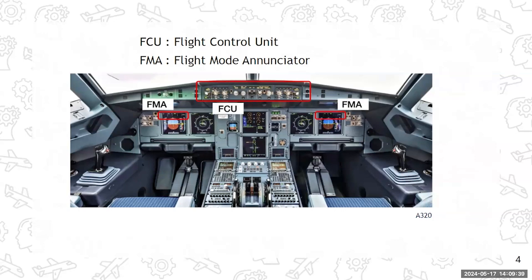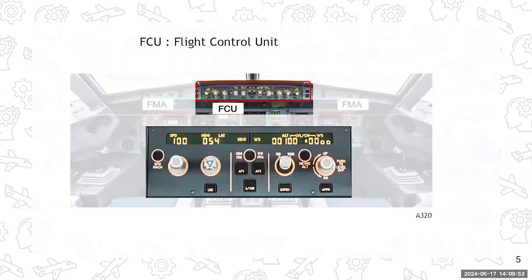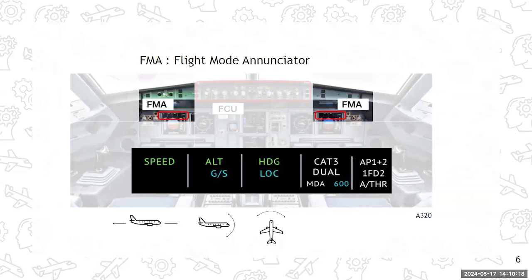The FCU allows the pilots to control the mode, and the FMA allows the pilots to check the status of each mode on each axis. This is an FCU — as you can see, there are multiple buttons that you can turn or push to engage those modes. There is limited information in these interfaces to know which mode is engaged on each axis. Manufacturers ask pilots to use the FMA to be aware of which mode is engaged, and in the first three columns the pilots can see the mode engaged for speed, altitude, and heading.